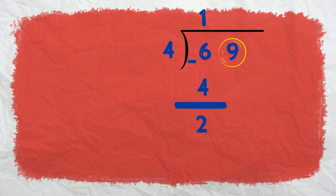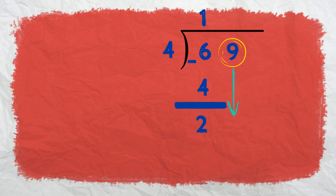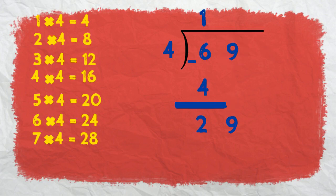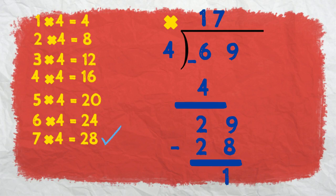Next, we move to the next digit, which is 9. But we need to remember the remainder from our last division step. We combine them by moving 9 down next to the remainder 2, making 29 altogether. We need to see how many 4s make 29 — from the 4s times table, 7 times 4 equals 28, which is very close to 29. So 28 goes right under 29, and we subtract: 29 take away 28 equals 1. The answer to 69 divided by 4 is 17 with a remainder of 1.